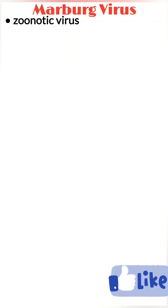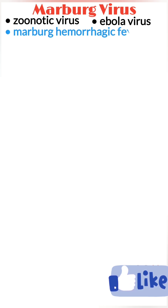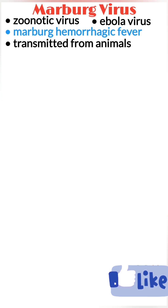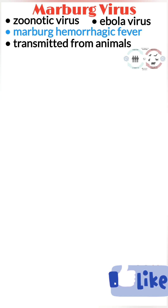Marburg virus is a zoonotic virus clinically similar to the Ebola virus and can lead to Marburg virus disease, formerly known as Marburg hemorrhagic fever. It is initially transmitted from animals to humans after close contact with an infected animal or its body fluids and through contaminated food products. The animal reservoir for the Marburg virus is the African fruit bat.